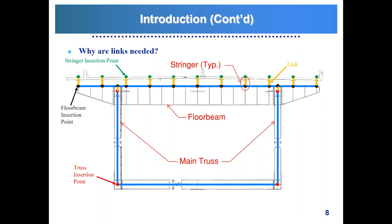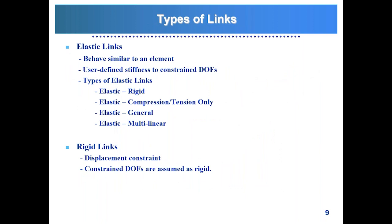Now that we understand where and why we apply links, we can jump into the types of links. Essentially there are two main types: elastic links and rigid links. Elastic links behave similar to an element in the sense that they have a stiffness in the different degrees of freedom. Rigid links, on the other hand, are either released or rigid — they are more of a displacement constraint. Elastic links have a stiffness that the user must define.